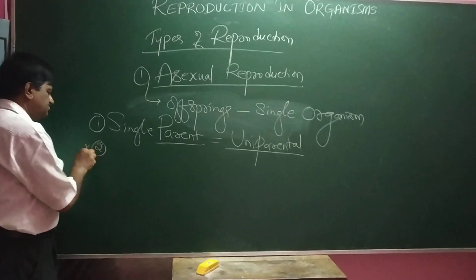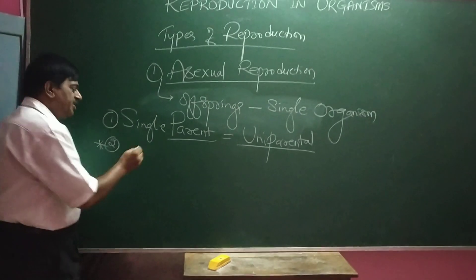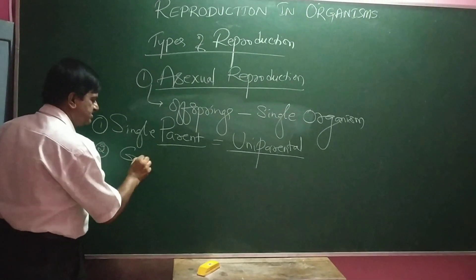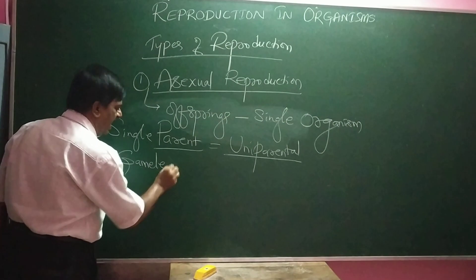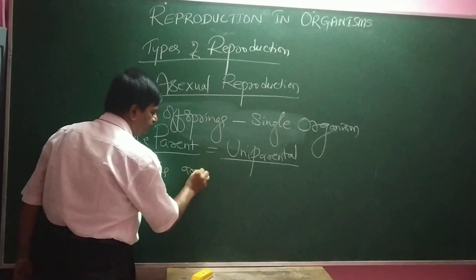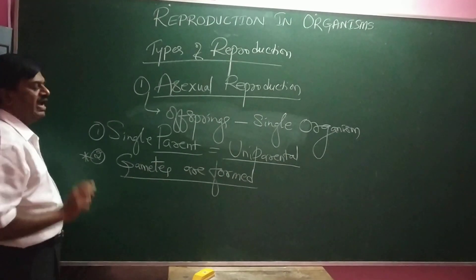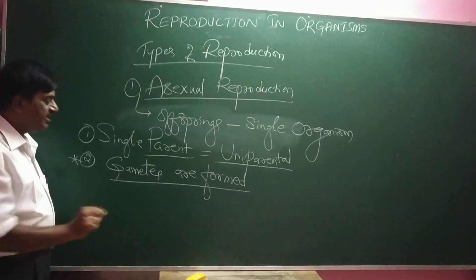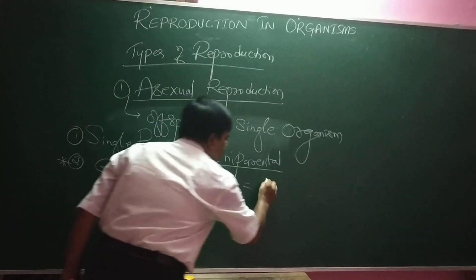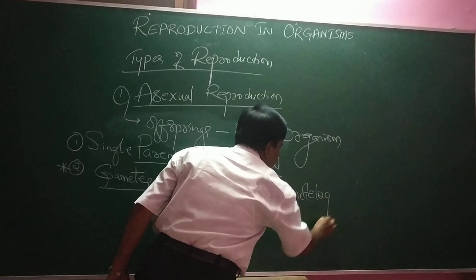Very important: in asexual reproduction, formation of gametes never takes place. The gametes are not formed. Hence, it is called agametogenesis — meaning the gametes are not formed during asexual reproduction.